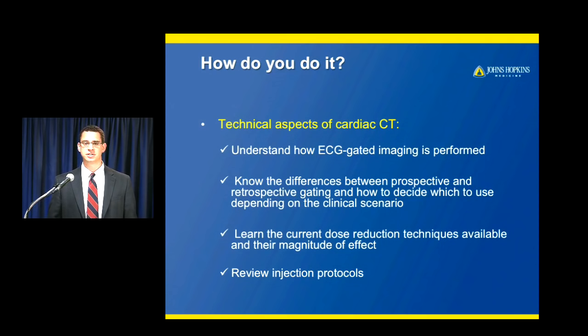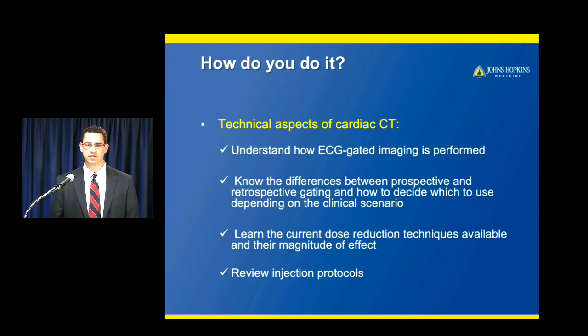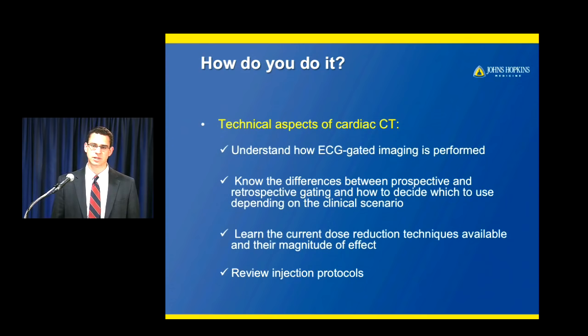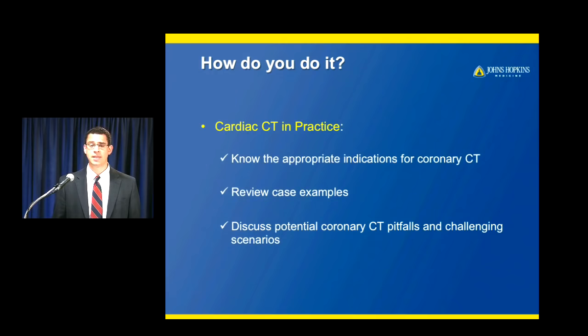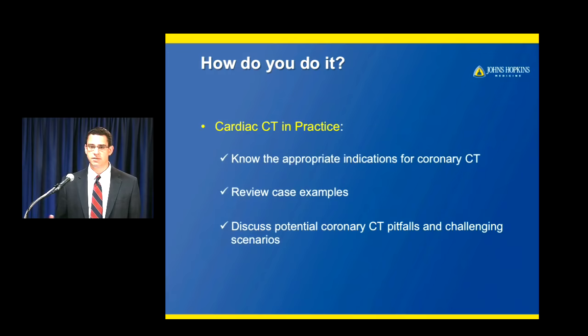We'll discuss the differences between prospective and retrospective gating and how to decide which one to use depending on the clinical scenario. We'll also talk about dose reduction techniques, which are really critical — cardiac CT has taken a lot of heat for high radiation dose, and the vendors have responded with options to reduce dose, but they don't work unless you use them. We'll also review injection protocols, appropriate indications, case examples, and potential pitfalls.